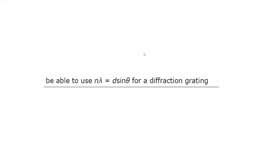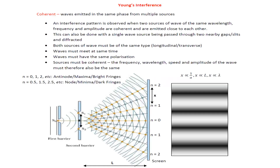In this session we'll discuss diffraction and interference of waves, specifically how a diffracted wave from two slits can interfere, and we can have a Young's double slit experiment.